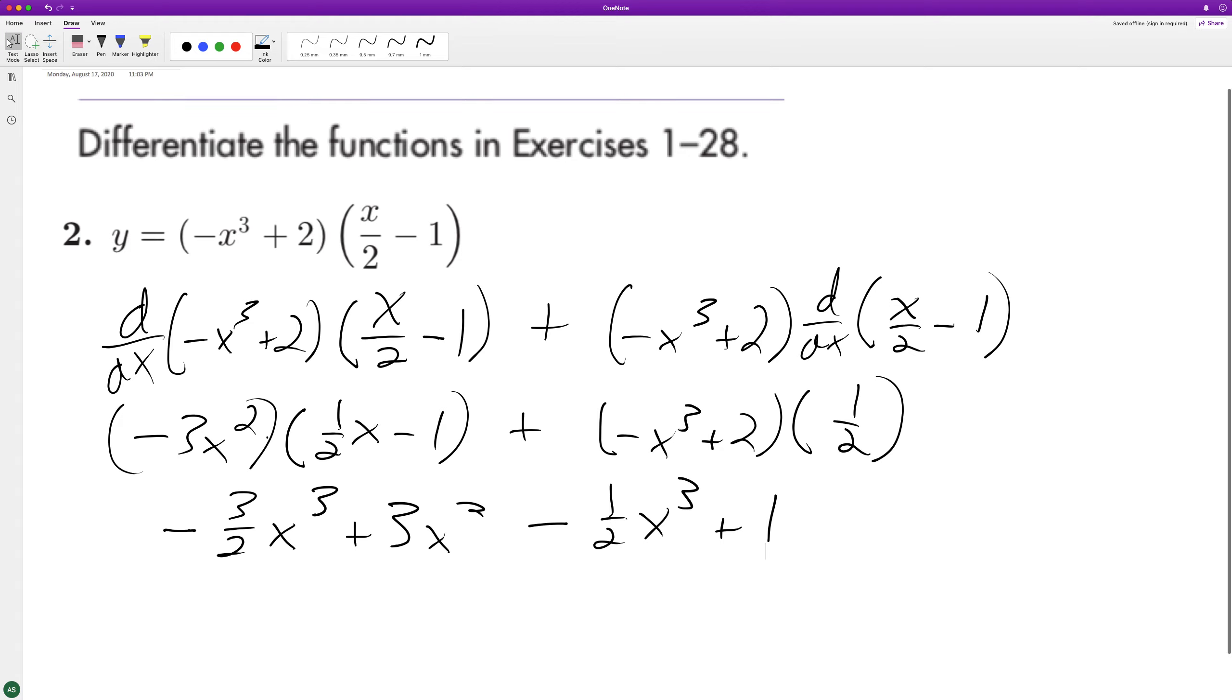So we end up with negative 2x cubed, because negative 3 halves minus 1 halves equals negative 2, 3x squared plus 1.